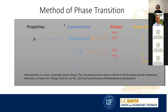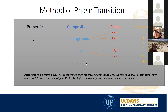Previously in ASPECT we had properties and compositions. Basically we take those properties on the compositions and average them. What we added is a phases layer under the compositions. So now we first compute properties on phases — such as density rho and viscosity — then average to compositions, and then average to the overall properties. This is done by phase functions that I will explain now.